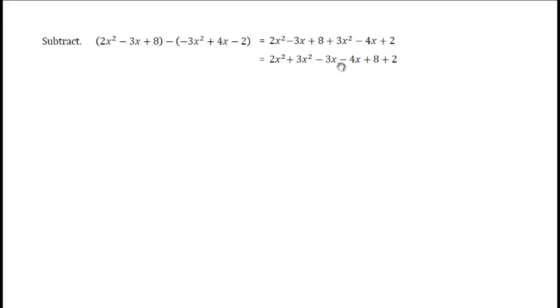The first two are like terms, the next two are like terms, and the final two are like terms. Then all we have to do is add or subtract the coefficients as appropriate. 2x squared plus 3x squared is 5x squared. Same signs add, keep the sign.